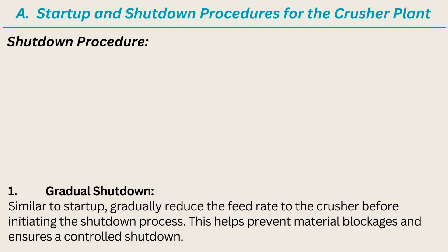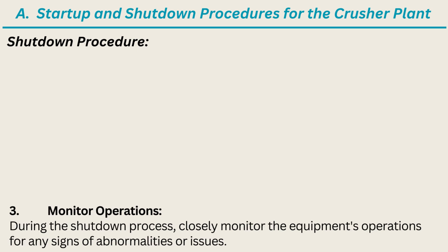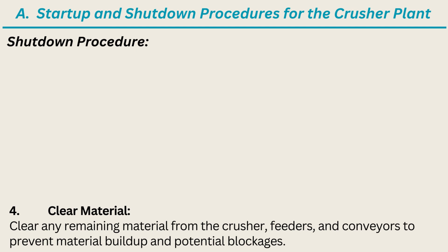Shutdown procedure. 1. Gradual shutdown. Similar to startup, gradually reduce the feed rate to the crusher before initiating the shutdown process. This helps prevent material blockages and ensures a controlled shutdown. 2. Stop feeders and conveyors. Stop feeding material into the crusher and allow the remaining material in the system to be processed and cleared. 3. Monitor operations. During the shutdown process, closely monitor the equipment's operations for any signs of abnormalities or issues. 4. Clear material. Clear any remaining material from the crusher, feeders, and conveyors to prevent material buildup and potential blockages.